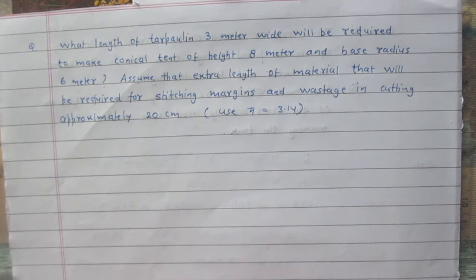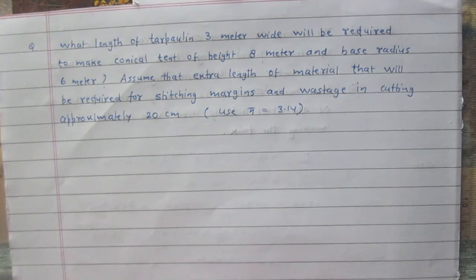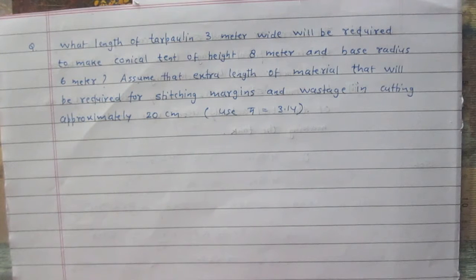What length of tarpaulin 3 meters wide will be required to make a conical tent of height 8 meters and base radius 6 meters? Assume that the extra length of material required for stitching margins and wastage in cutting is approximately 20 centimeters.